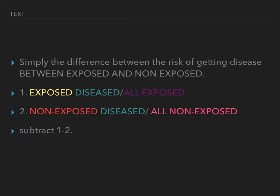It's simply the difference between the risk of getting the disease between exposed and non-exposed. We have the same two initial calculations as we did for relative risk: exposed disease over all exposed, and non-exposed disease over all non-exposed. But instead of dividing one by two as we did in relative risk, we subtract one minus two.